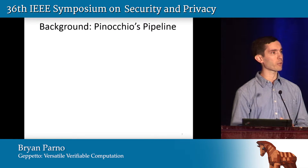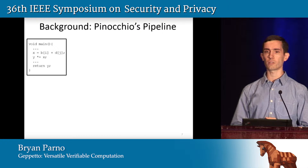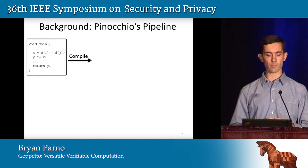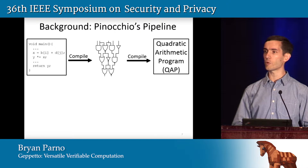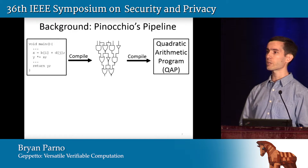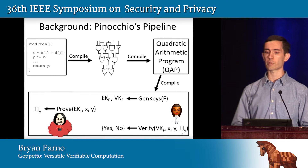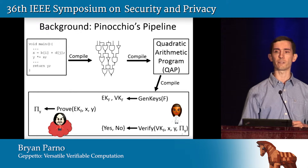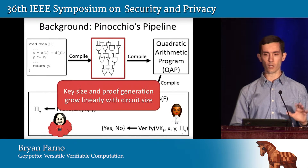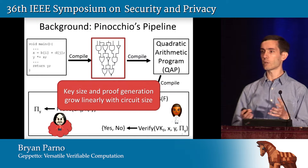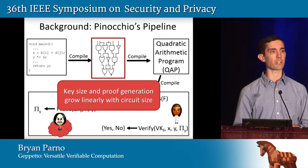To give a little background: the Pinocchio system took the C code you wanted to outsource to the remote cloud and compiled it to an intermediate representation that looked like a circuit. That circuit was then compiled to an encoding we call a quadratic arithmetic program, or QAP, and that encoding is designed to lend itself to very efficient cryptographic protocols such as the key generation, proof generation, and verification algorithms. The cost of generating the proof as well as the key size grows in proportion to this intermediate circuit representation — and so that's where we'll focus our optimization efforts.